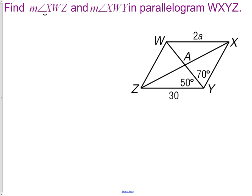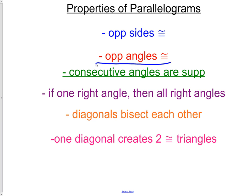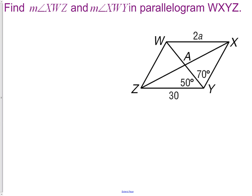Here's an example. Find the measure of angle XWZ and the measure of angle XWY in parallelogram WXYZ. Let's start with the easier of the two of them, and that is XWZ. So that would be this angle right here. We learned from the properties of parallelograms that opposite angles are congruent. Well, if you'll notice here, this angle down here and this angle up here are our opposite angles. What that allows us to say is that the measure of angle XWZ